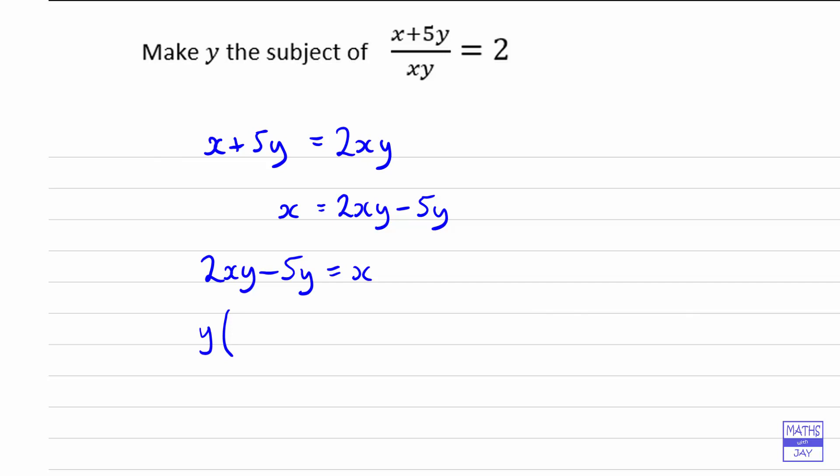So taking y outside of a bracket we've got y times 2x to give us the 2xy. And then to get the minus 5y we'll have minus 5 inside the bracket. The right hand side doesn't change. We want y to be the subject so now all we need to